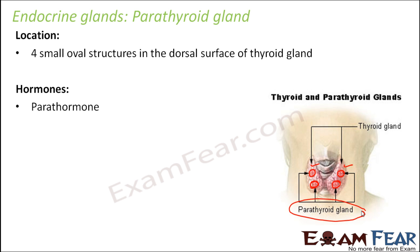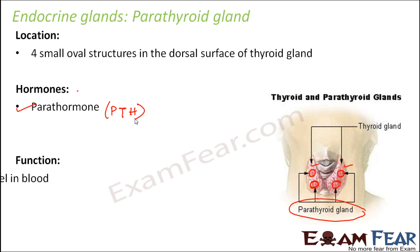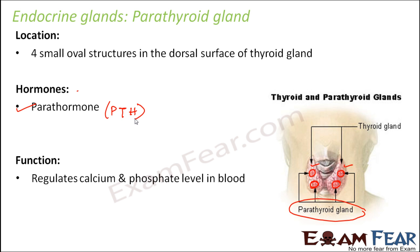The hormone secreted by the parathyroid gland is parathormone, often written in short form as PTH. Let us look at the function of this hormone — it regulates the calcium and phosphate level in blood.